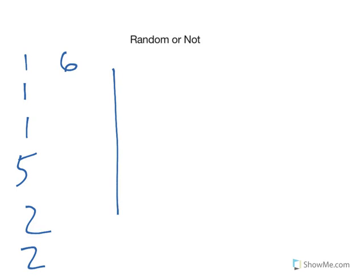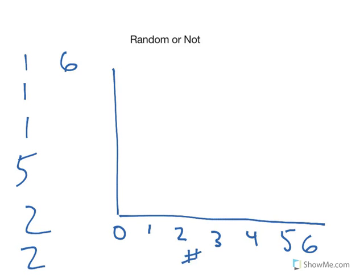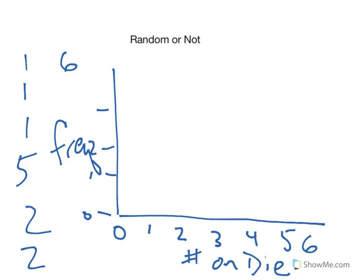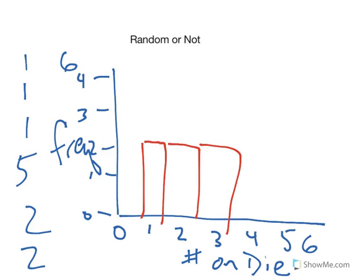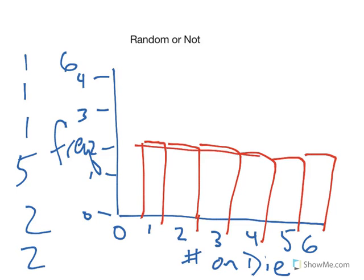When you graph these using a frequency distribution, if the event is random, here are all the different dice rolls — one, two, three, four, five, six — on the x-axis, and over here is the frequency. If I roll this die 12 times, each of these numbers should come up about twice, and the frequency distribution should basically plateau out, because each of these has an equal probability of occurring.